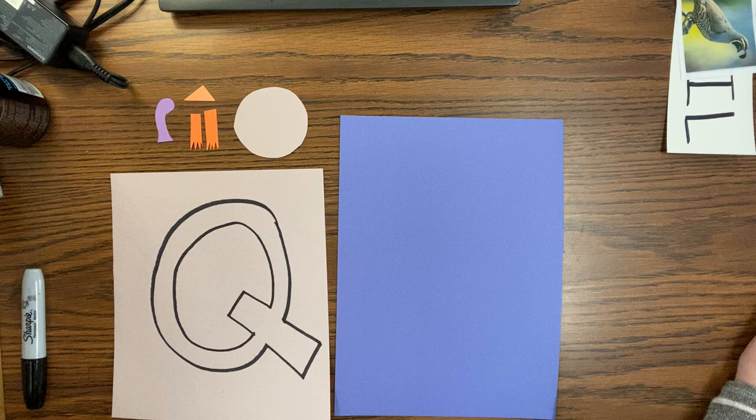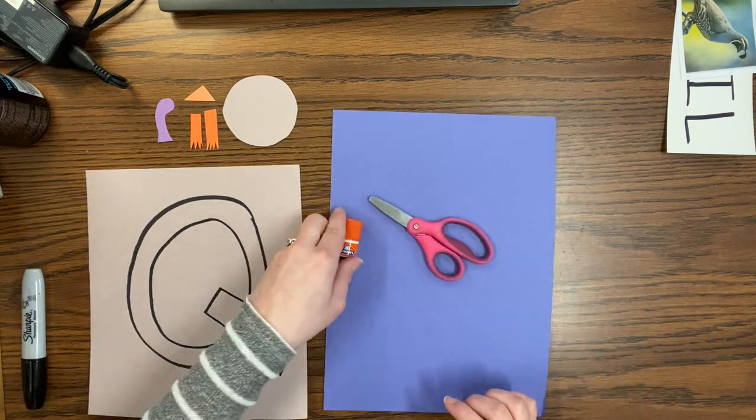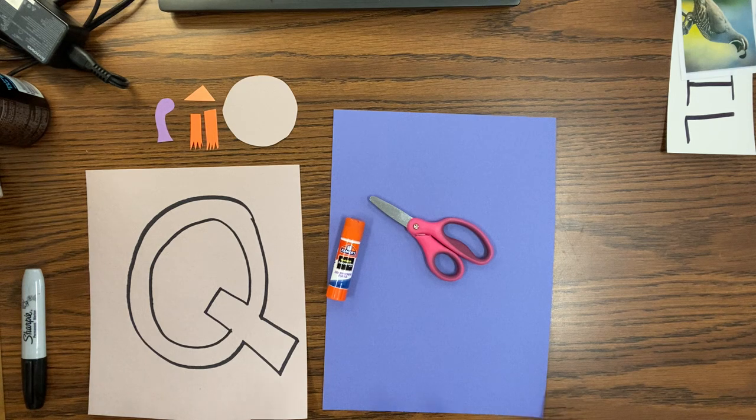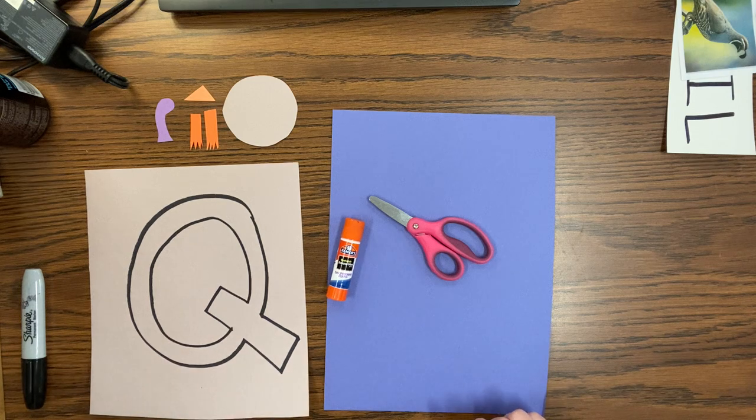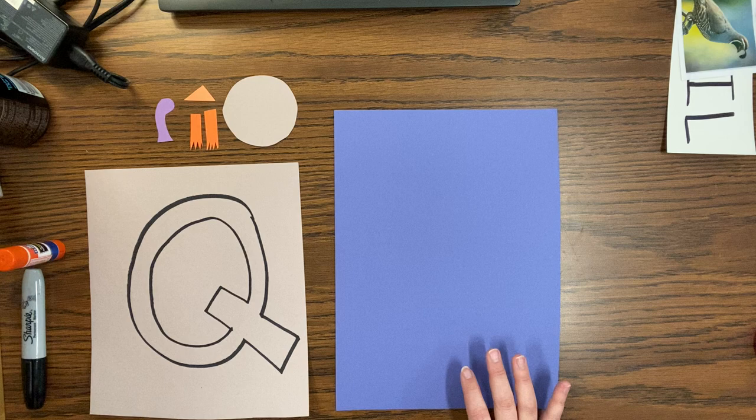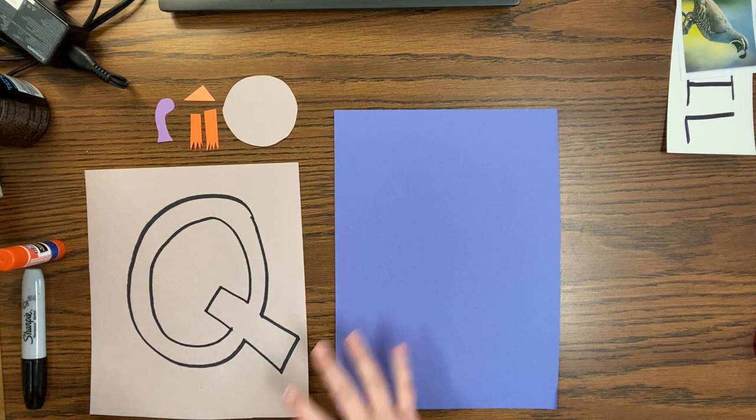Now, to do this project, you're going to need scissors and a glue stick. Okay, before we start, the first thing Miss Kim always wants you to do is what? Write your name so I know whose beautiful art it is.